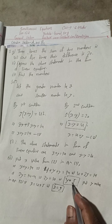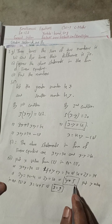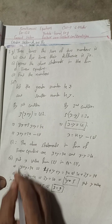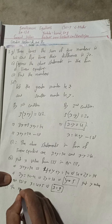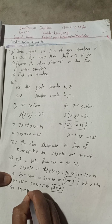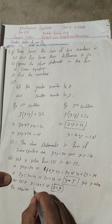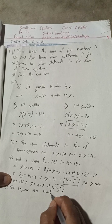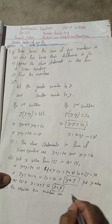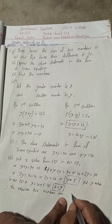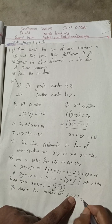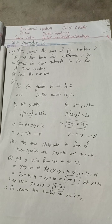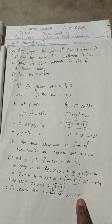So x equals 9 and y equals 5. Therefore, the required two numbers are 9 and 5. This is the required solution.